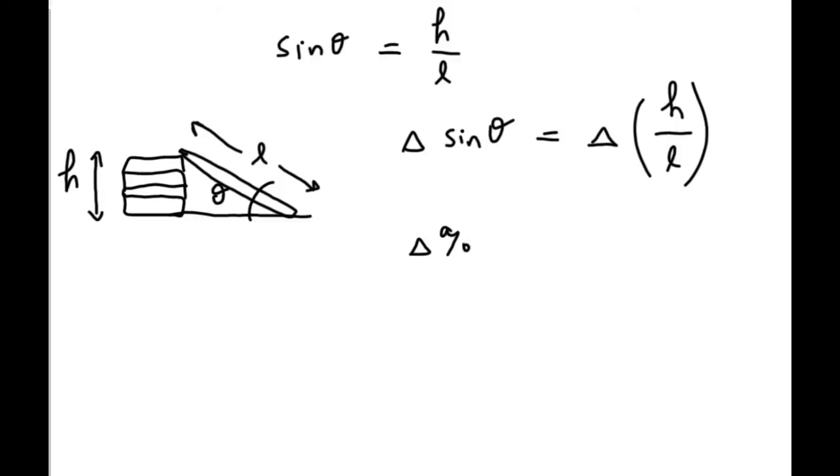But first, before we can calculate that, we're going to find the percent uncertainty in H over L. So, the percent uncertainty in this quantity, well, the percent uncertainty in any quotient or any product of two measurements is simply equal to the sum of the percent uncertainties in each measurement.